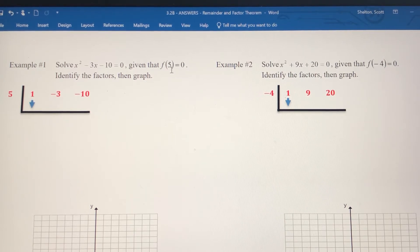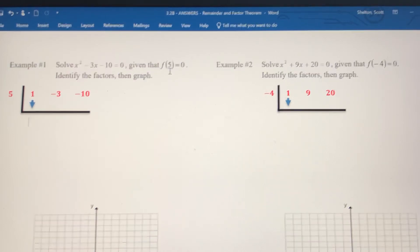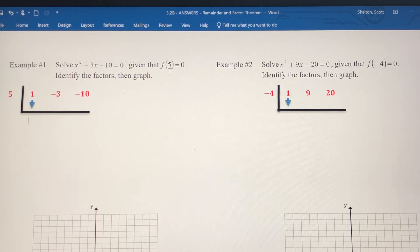You're going to be given one of the zeros in this process to kind of get you started. So we know here f of 5 equals 0, so 5 is a zero of this polynomial. We want to identify the factors. This is going to give us one, we'll talk about that later on, but we want to find the second one.